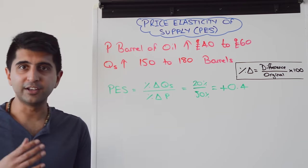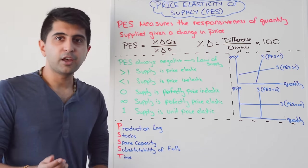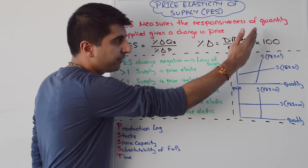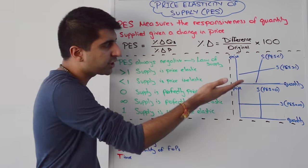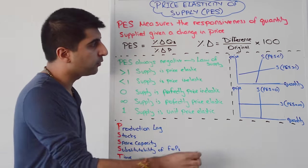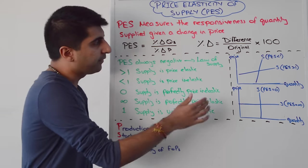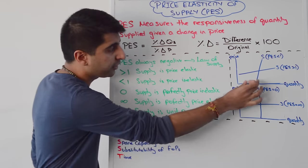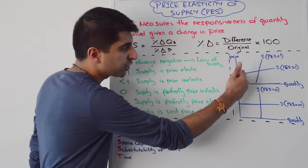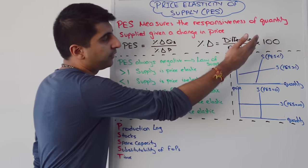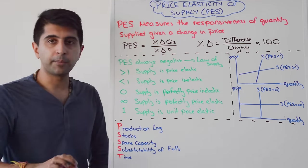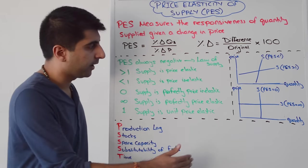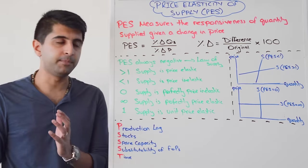Let's go back and look at diagrams and determinants. How do we draw supply curves when we know the price elasticity of supply? If supply is price inelastic, we draw our supply curve steep — for any given change in price, the responsiveness of quantity supplied will be proportionately less. If supply is price elastic, we draw the supply curve quite shallow. At the extremes: perfectly price inelastic supply is drawn vertical, and perfectly price elastic supply is drawn horizontal — exactly the same concept as PED.